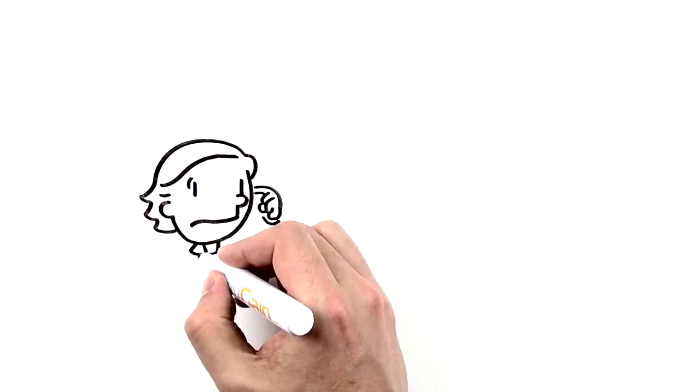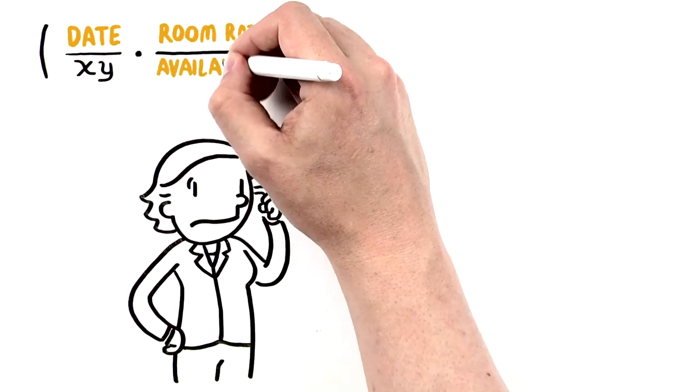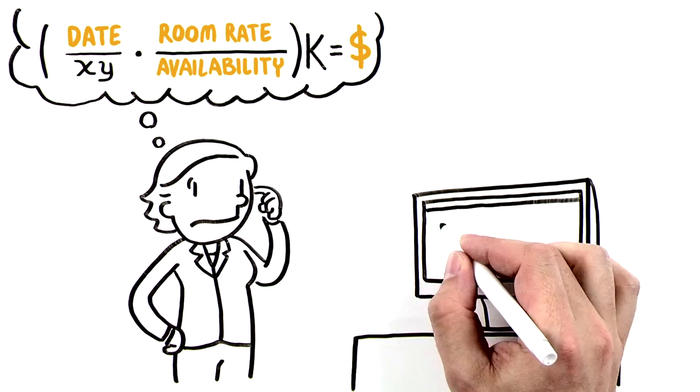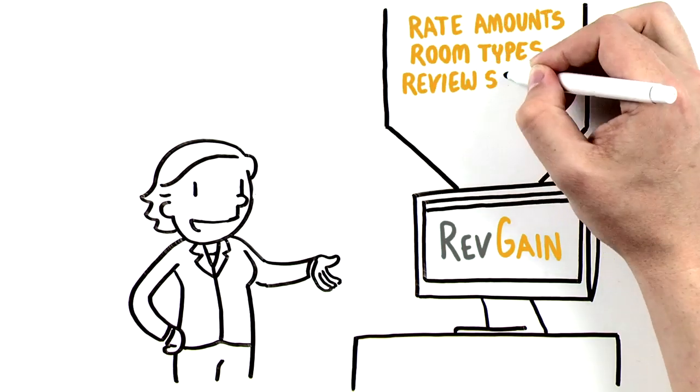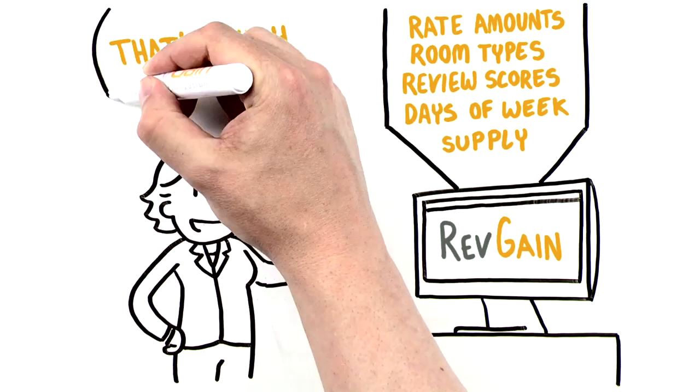How do you decide on the optimum rate when there are so many variables to consider? That's why we've developed Revgain, a new and easy way to make pricing decisions based on real-time data most relevant for your hotel.